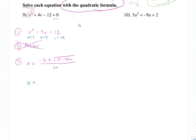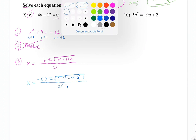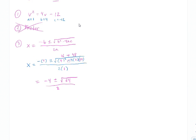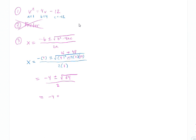Writing it out with empty parentheses first so I don't make sign mistakes. Plugging in: negative 4, plus-or-minus square root of 4 squared minus 4 times 1 times negative 12, all over 2 times 1. Simplifying inside the square root: 16 minus, but negative times negative is actually plus, so 16 plus 48 equals 64. This is a perfect square, so we keep going — square root of 64 is 8.